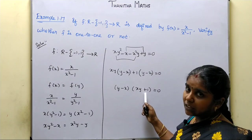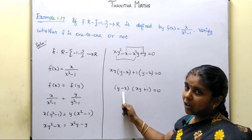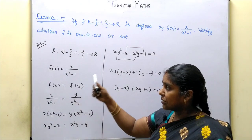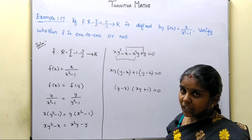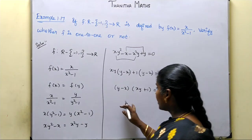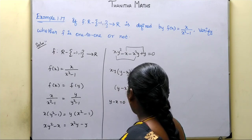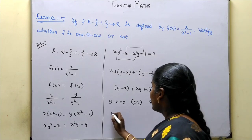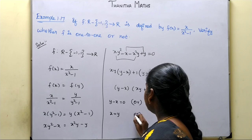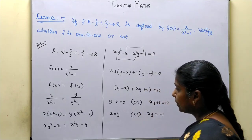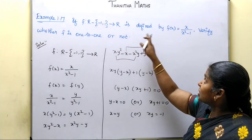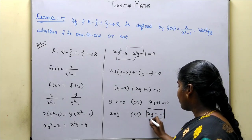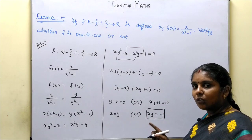Now suppose the second condition holds: xy + 1 = 0, meaning xy = -1. In this case, f(x) equals f(y) but x is not necessarily equal to y. We need to check whether this condition can actually be satisfied by values in the domain.